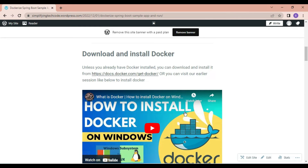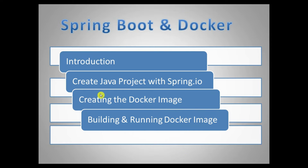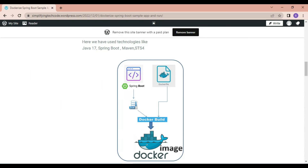The link is provided in the video description, and for more information you can go to the Docker documentation page. Now, what we are going to achieve in this session: we will develop a sample Spring Boot application, package it into a JAR file, provide a Docker configuration file called Dockerfile, and by using this Dockerfile we will do the Docker build and deploy that build into a Docker image. The agenda is: introduction, create a Java project with Spring.io, create the Docker image, and build and run the Docker image.